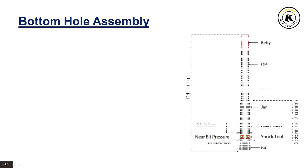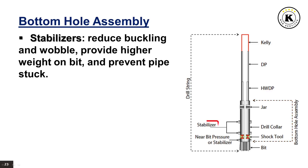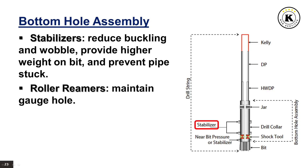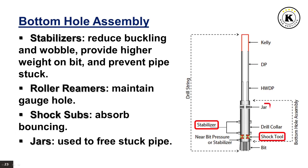The bottom hole assembly (BHA) is the components used above the bit, not including the drill pipe. It is composed of: stabilizers, which reduce buckling and wobble, provide higher weight on bit, and prevent stuck pipe; roller reamers, which maintain gauge hole; shock subs, which absorb bouncing; and jars, which are used to free stuck pipe.